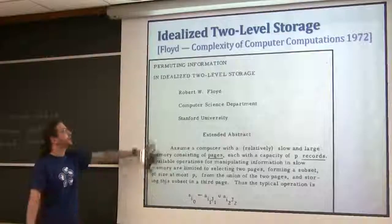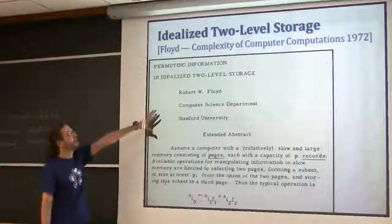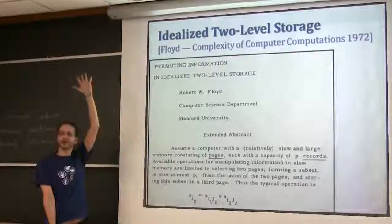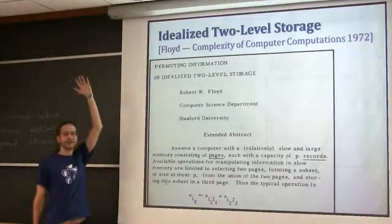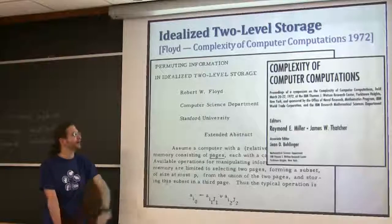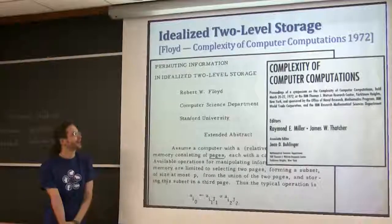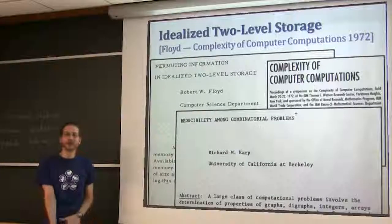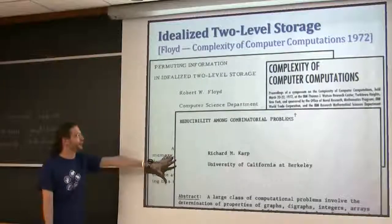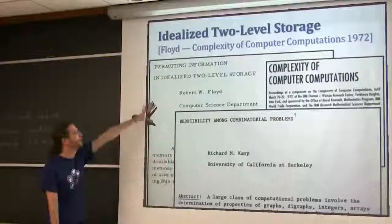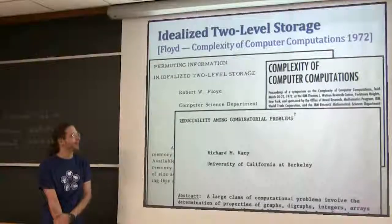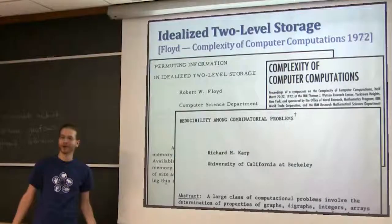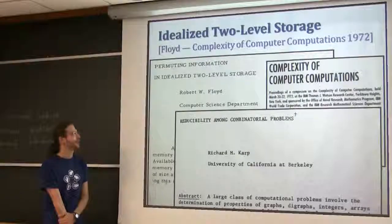This was published in a conference called the Complexity of Computer Computations. It's kind of a classic, because it had Karp's original paper on NP-completeness - so you've definitely read this paper. But there are a lot of neat papers in there, and a panel discussion including what should we call algorithms. It's kind of a fun read.